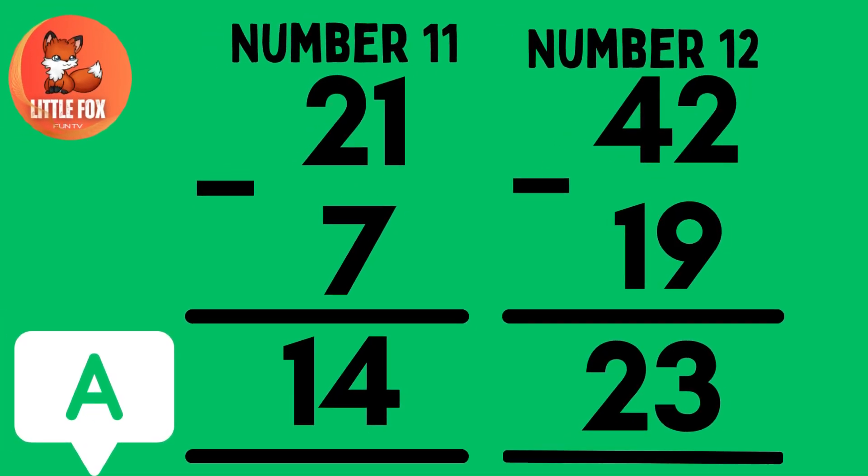Number 11. 21 minus 7 is equals to 14. Number 12. 42 minus 19 is equals to 23.